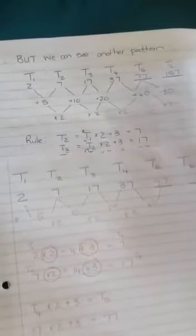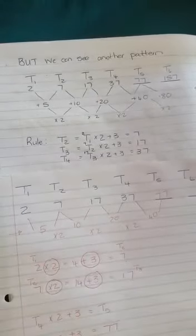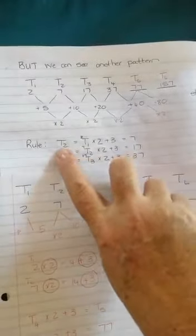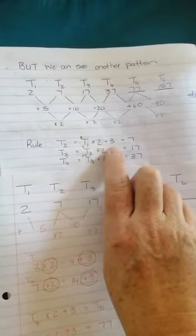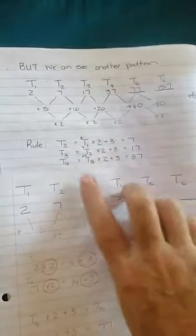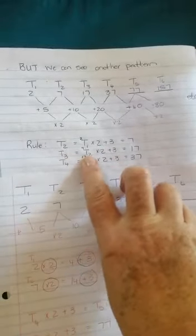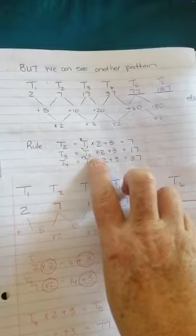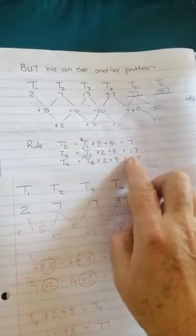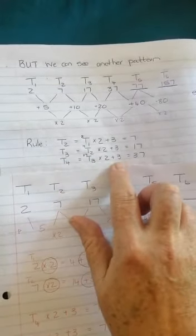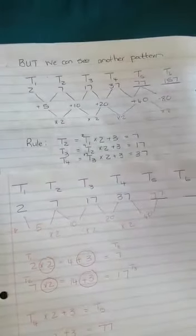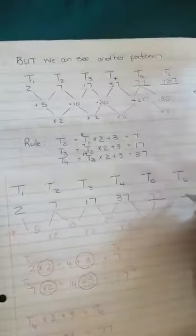I write it out like this. T2 is equal to T1 times 2 plus 3, which gives you 7. Then term 3 is term 2, which is 7, times 2 plus 3 is 17. Term 4 is term 3, times 2 plus 3, which is 37.